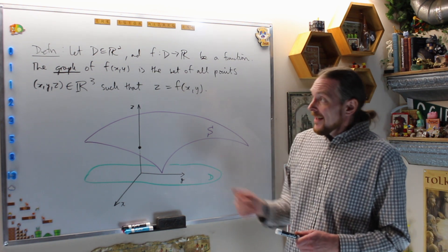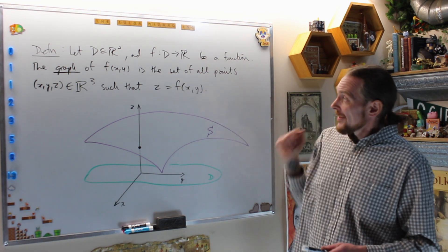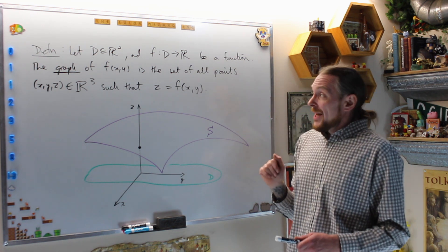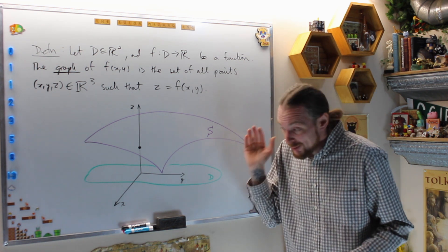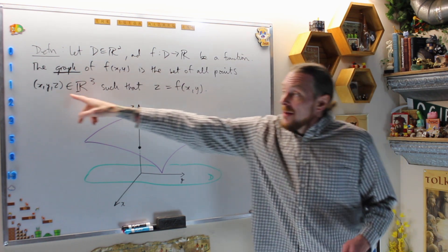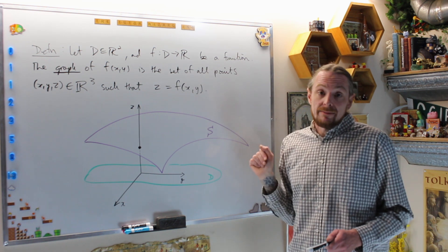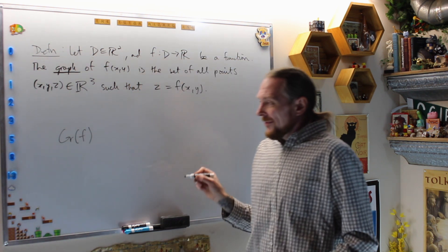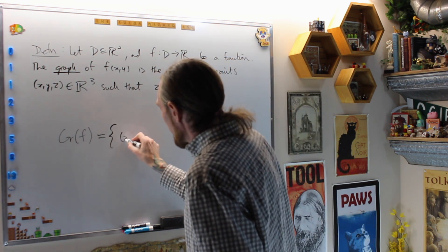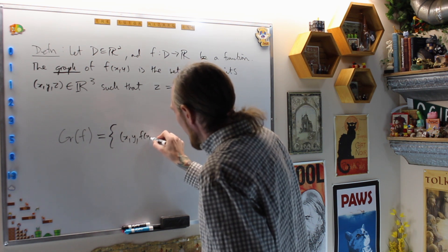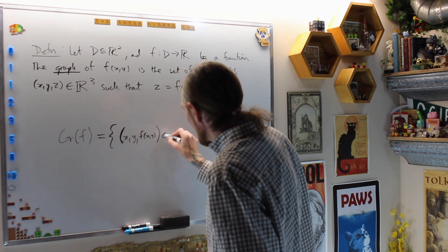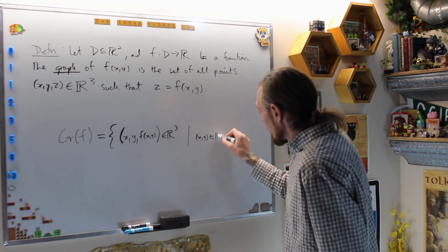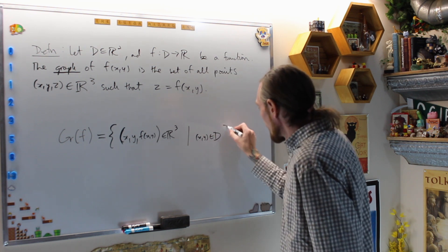More rigorously, the definition says that if D is a subset of R² and f is a function from D to R, which is a function of two variables, then the graph of f of xy is the set of all points (x,y,z) in R³ such that the third coordinate z is the function f of xy.